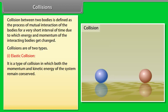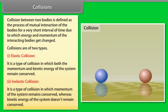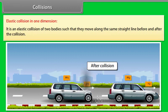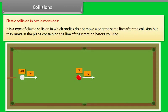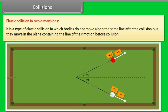Number two, inelastic collision. It is a type of collision in which momentum of the system remains conserved whereas kinetic energy of the system doesn't remain conserved. Elastic collision in one dimension: It is an elastic collision of two bodies such that they move along the same straight line before and after the collision. Elastic collision in two dimension: It is a type of elastic collision in which bodies do not move along the same line after the collision, but they move in the plane containing the line of their motion before collision.